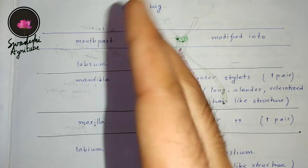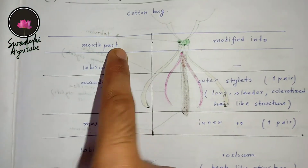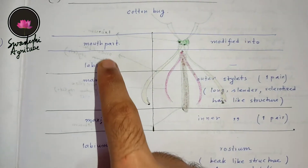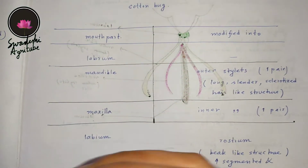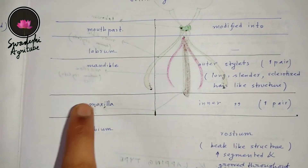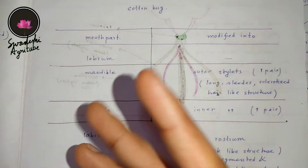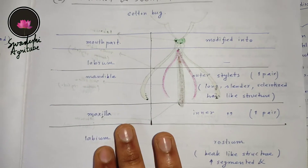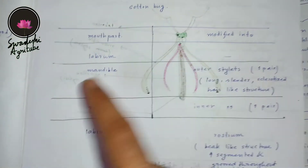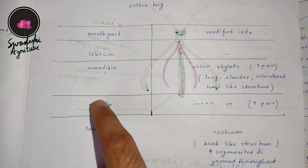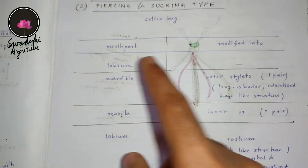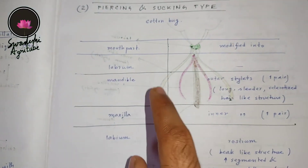I have made a chart — on the right side you can see the mouthpart and on the left side what it is modified into. An ideal insect should have labrum, mandible, maxilla, and labium, but in some insects each of these is modified into something different. In the piercing and sucking type we will see how these four mouthparts are modified.